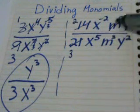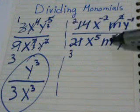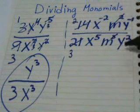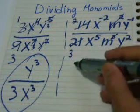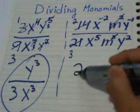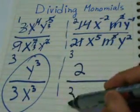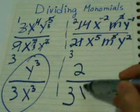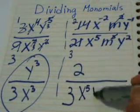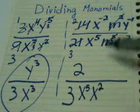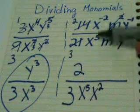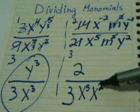This m^2 I cancel with m^3. I will have m down. And this one I have to write it down. So I have 2 over 3x^5x^2, because this x to the negative 2 goes down with the positive exponent.